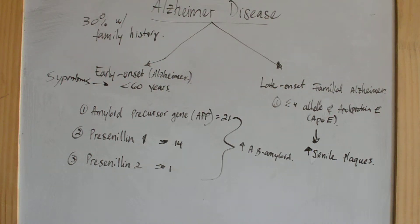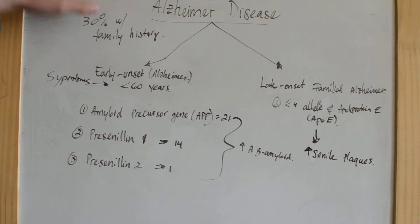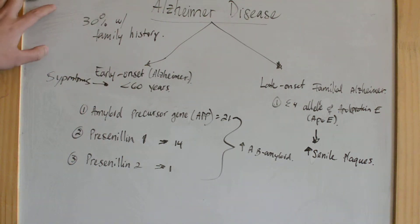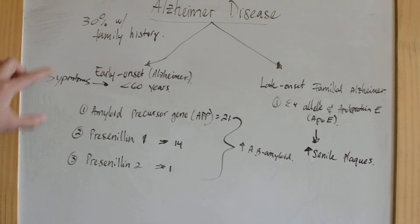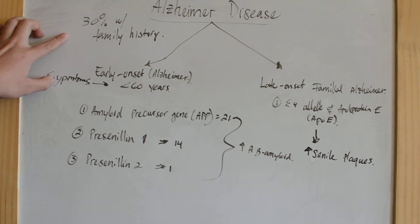Alzheimer's disease has a strong genetic predisposition. About 30% of patients have a family history of the disease.